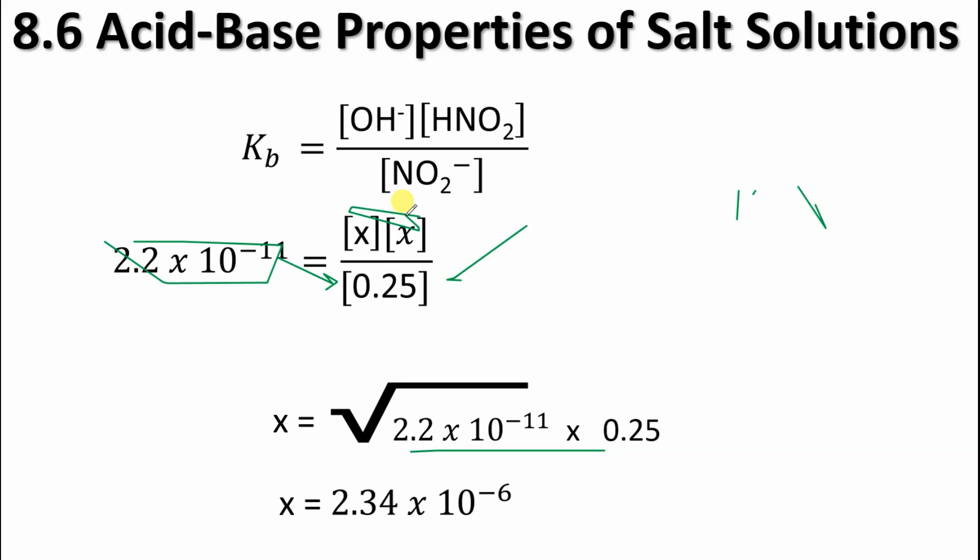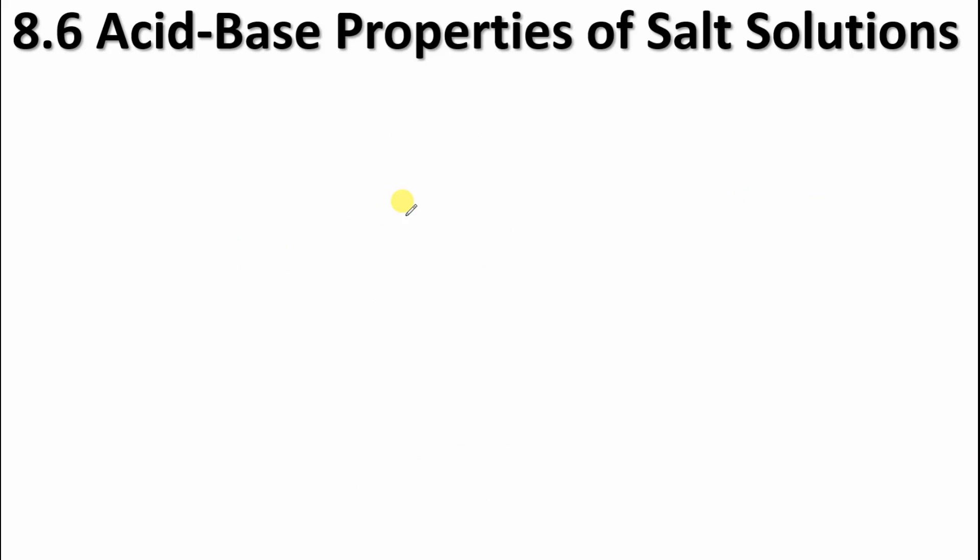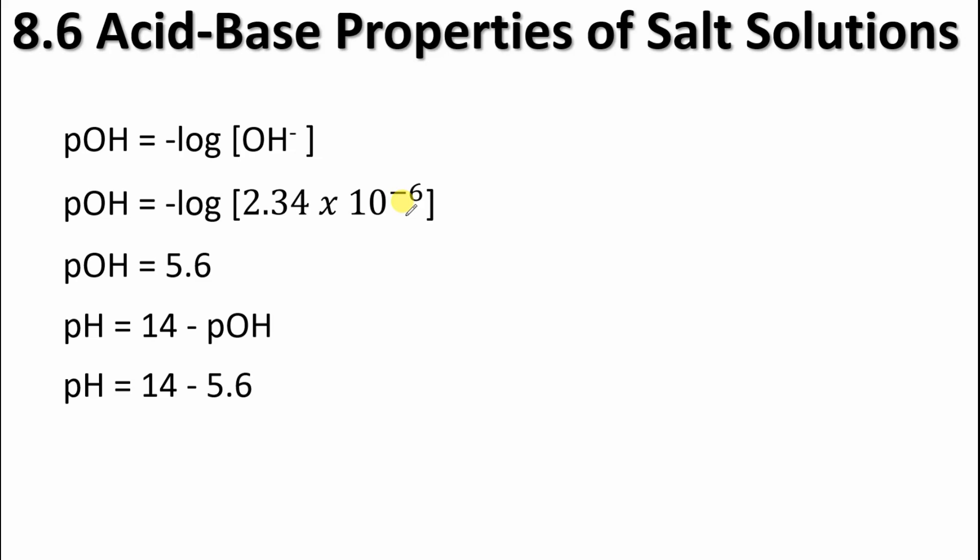So, we're not done yet, though. We still need to do something with this value. And keep in mind, this is Kb. This is OH. So, as we proceed here to the next step, we're actually kind of determining the pOH, which isn't what we want. But we're just going to take the negative log of our answer. And when you do that, you get an answer of 5.6, which does check out on the pOH scale. But this question did say pH, which means we're going to have to do one last step where we take 14 and subtract our answer of 5.6. And when you do that, you should get a nice basic answer of 8.3.